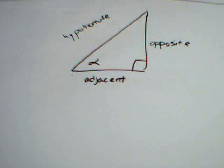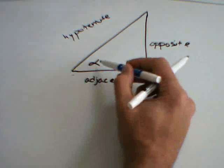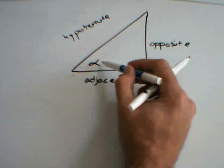When we think of right triangle trigonometry, we want to think in terms of sides and angles. Here, we have one angle labeled as alpha.